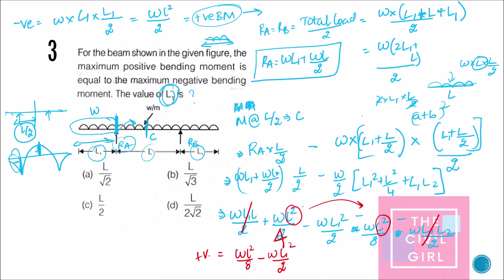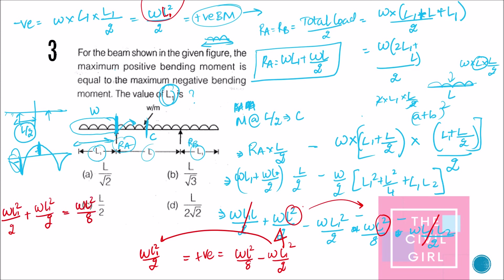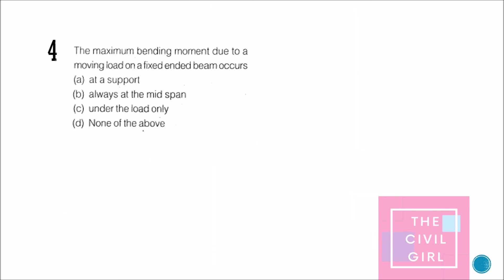Setting positive bending moment equal to the negative bending moment: wL1²/2 = wL²/8 − wL1²/2. Solving this equation gives L1 = L/(2√2). So option D is the correct answer.